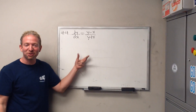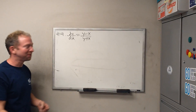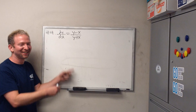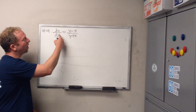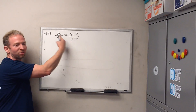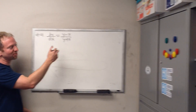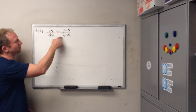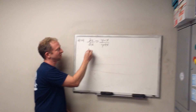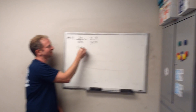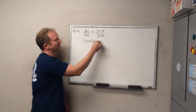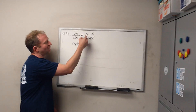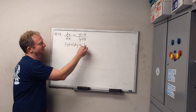What do we do first, Sasha? We're going to cross-multiply, right? Cross-multiply. So it's y plus x. So y plus x dy equals y minus x dx.